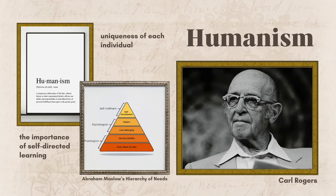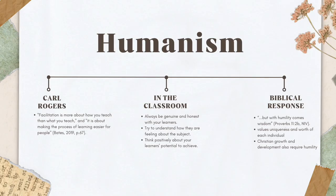Lastly, humanism emphasizes the uniqueness of each individual and the importance of self-directed learning. This theory suggests that individuals must feel valued and free to engage in their own learning in order to grow and develop to their full potential. Carl Rogers' facilitation theory suggests that the teacher should be a facilitator of learning rather than an authority figure. Facilitation is more about how you teach than what you teach, and it's about making the process of learning easier for people, according to Bates.